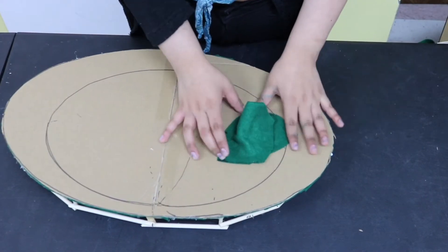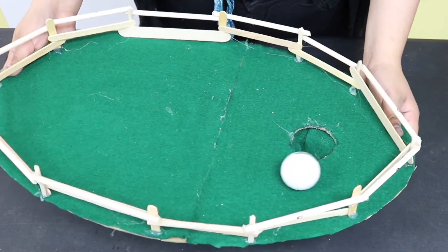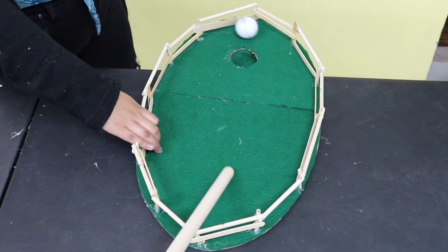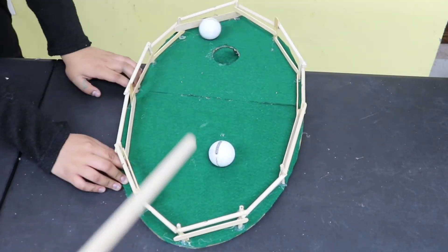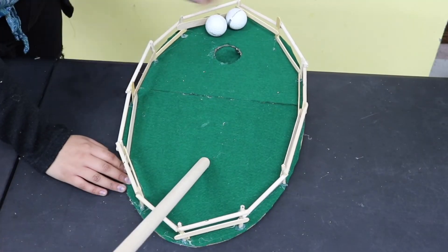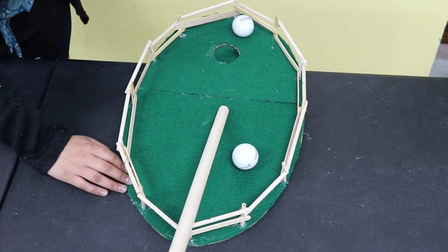Once you're done attaching your funnel to the back of your pool table, flip it over and it's done. That's all there is to it. Use your thick dowel to hit the ball and try to make it into the hole. See how many tries it takes you.